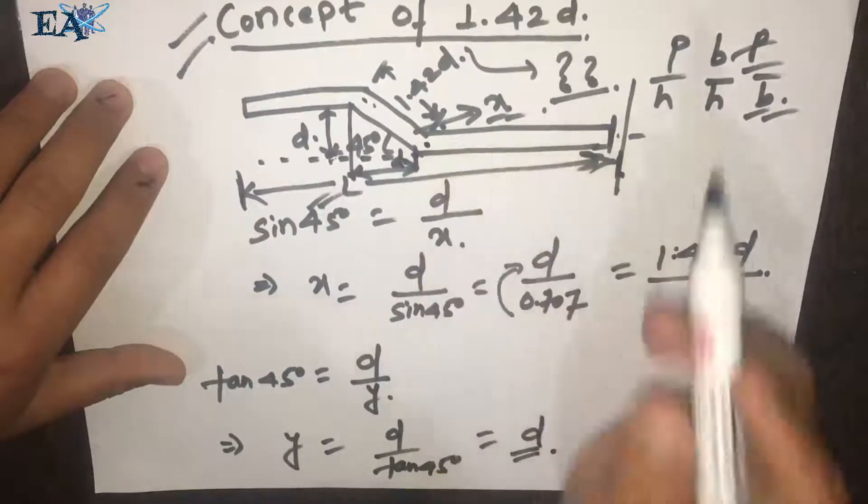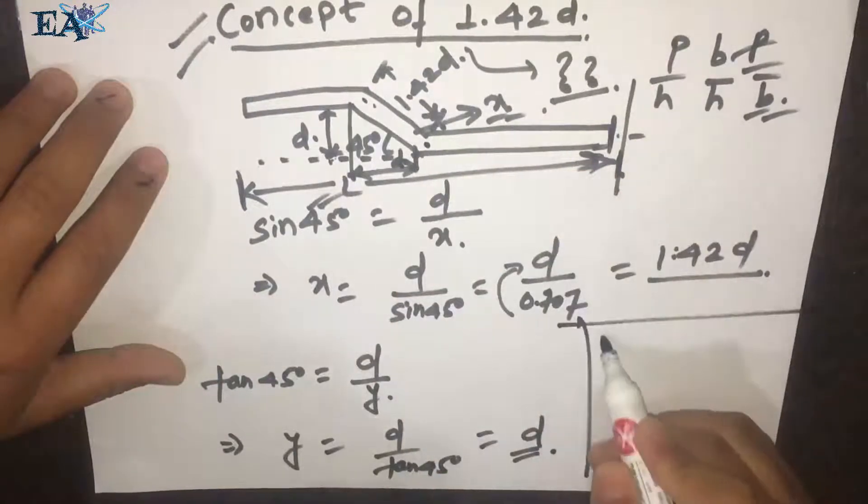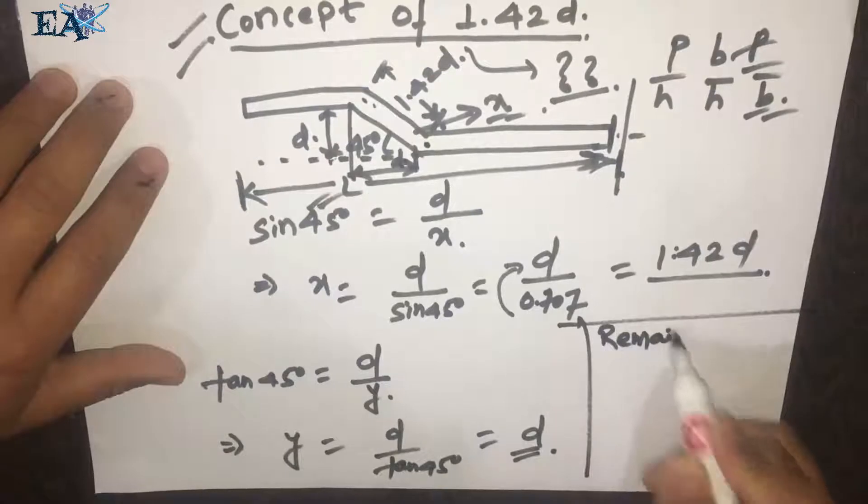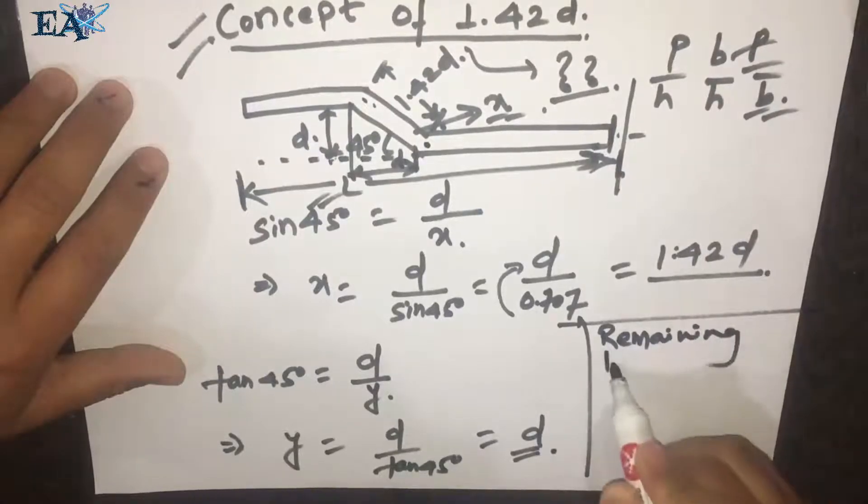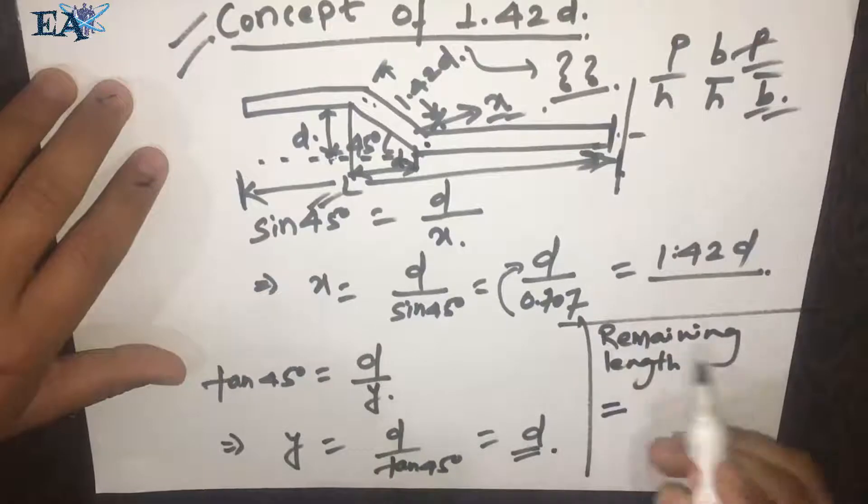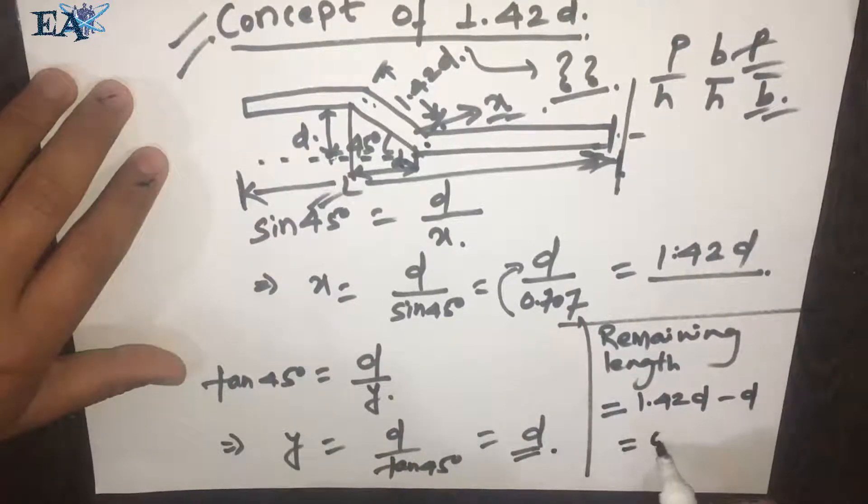The remaining length is equal to 1.42D minus D, which is 0.42D.